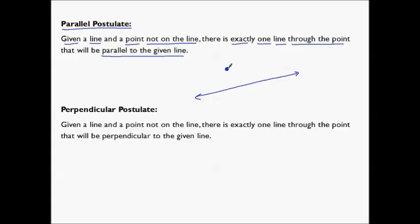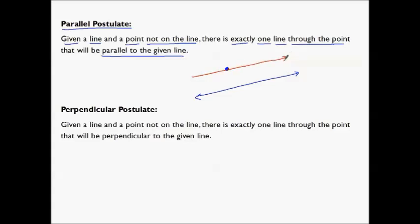What does that mean? I can draw lots of lines through this point — I can draw a line like this, or a line like this, or a line like this — but there is only one possible line that I can draw that will be going in the same direction, never intersecting this other line. Seems pretty straightforward, which is why it's a postulate. Postulates are accepted without proof.